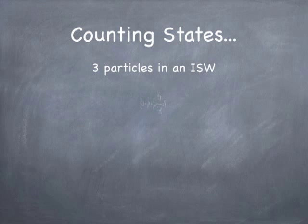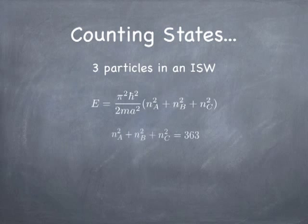Let's talk about three particles in an infinite square well. Suppose I have three particles in an infinite square well of size A, and one of them is in state A, one is in state B, and one is in state C. The question is, how are they sharing the energy? Let's say they have a total energy that's fixed. Since the energy is proportional to the sum of the squares of the state numbers, the sum of the squares of the state numbers has to be constant.